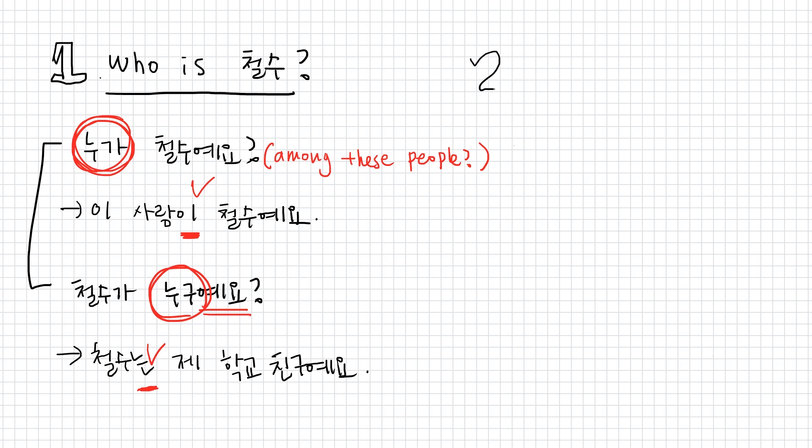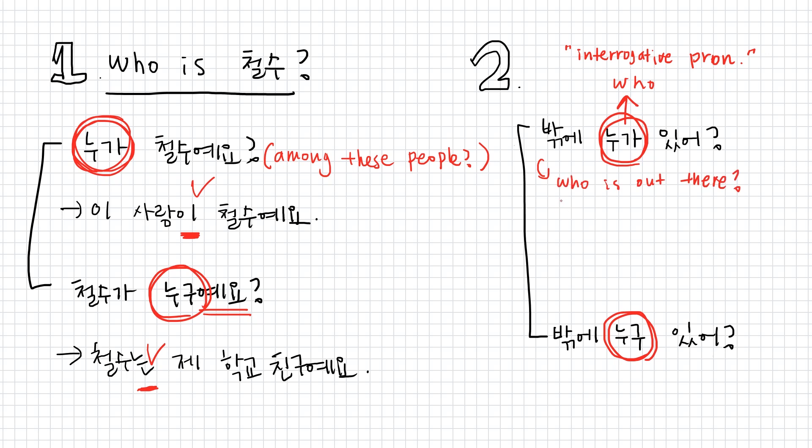It's like who is 철수 among these people. And the answer to this question would be like an explanation of 철수. For example, 철수는 제 학교 친구예요. 철수 is my school friend. Here if you don't know why 이 is used here, 는, then please watch my another video covering 은는 and 이가. My second tricky question is what's the difference between these two sentences? 밖에 누가 있어? 밖에 누구 있어?